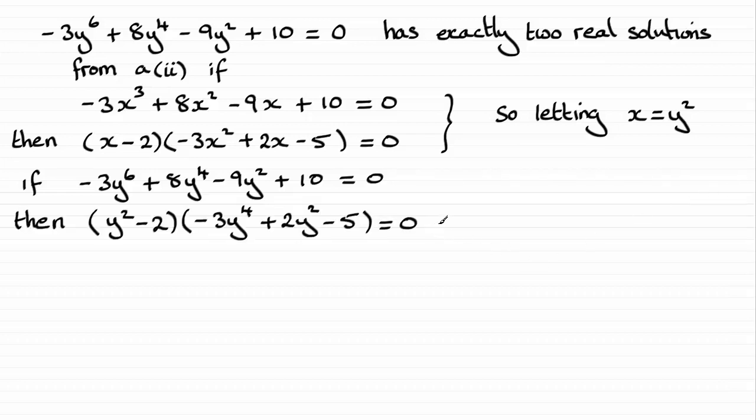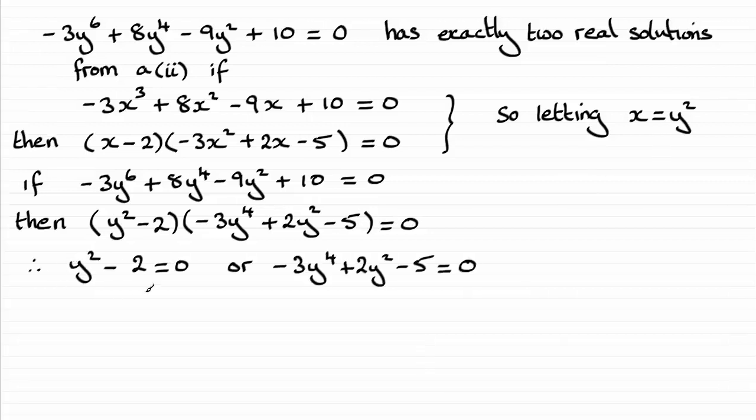So it's just a question now of solving this equation. So that means we can put each of these factors equal to zero. So taking this equation here, if I add 2 to both sides and then take the square root, you end up with y equaling plus or minus root 2.